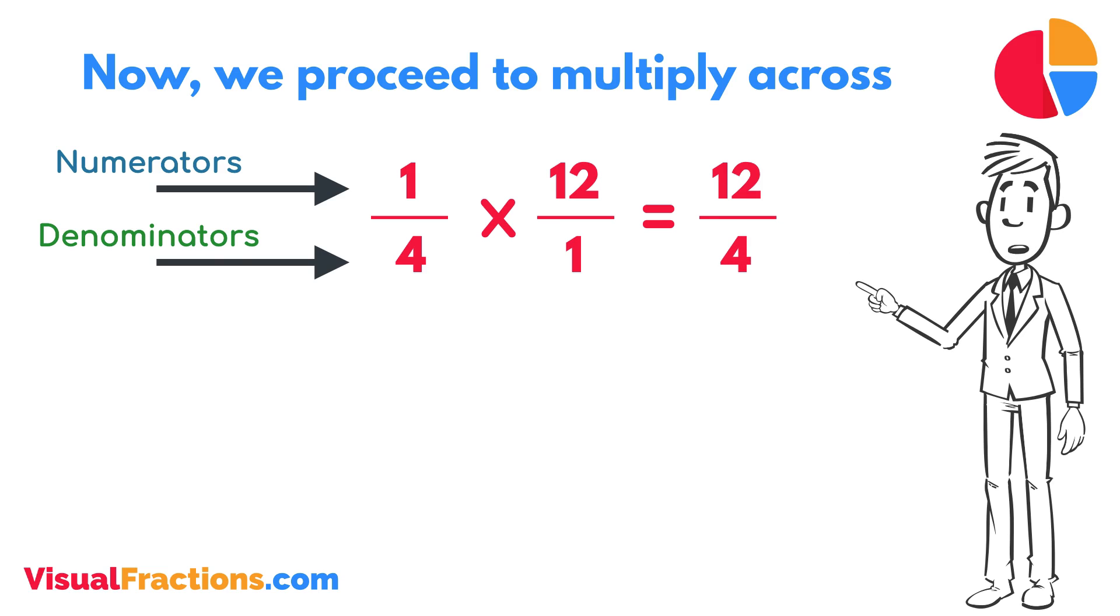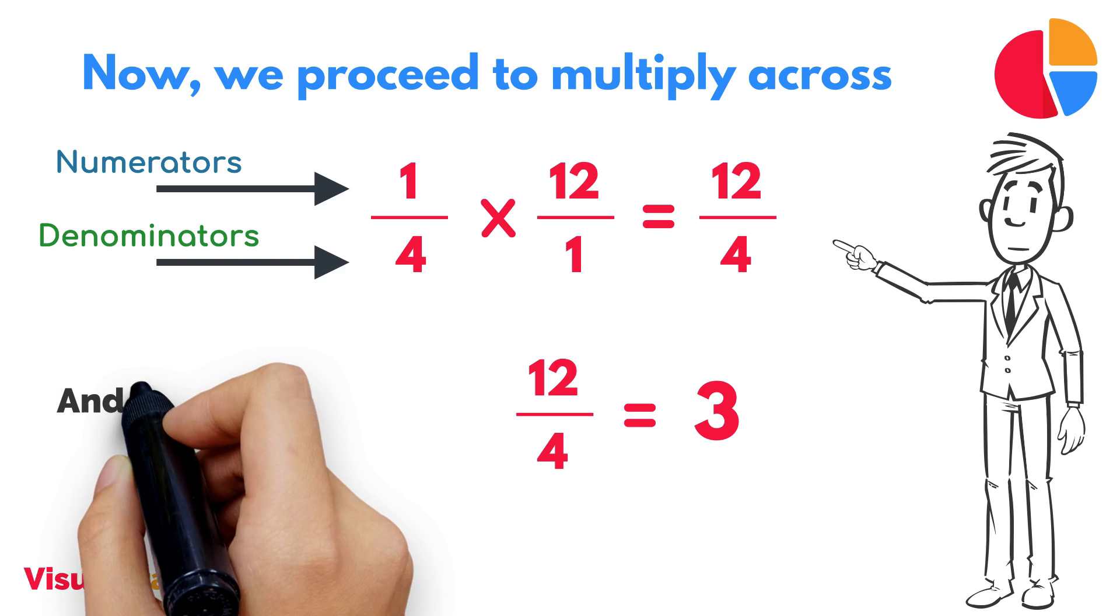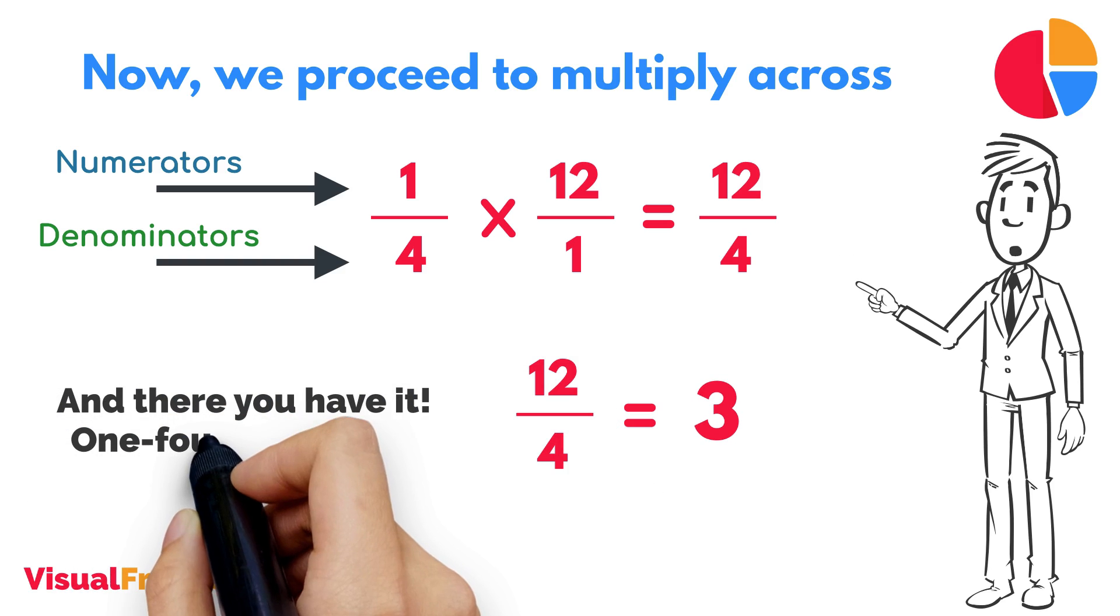We now have a new fraction, 12 quarters. To find the final answer, divide the numerator by the denominator. So, 12 divided by 4 equals 3. And there you have it. 1 fourth of 12 is 3.